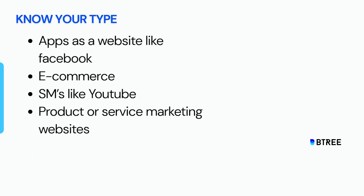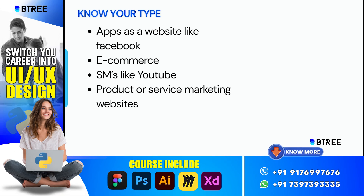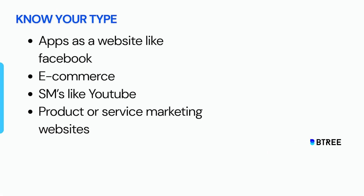The first type is called e-commerce — to buy something, like Amazon or Flipkart. This is only to buy something. The second is called social media, like media-related apps like YouTube. Facebook is actually a website, YouTube is actually a website — you play and consume videos. So that's the social media type of website.